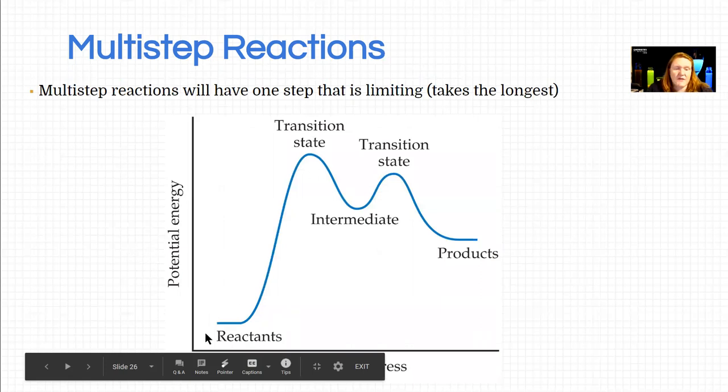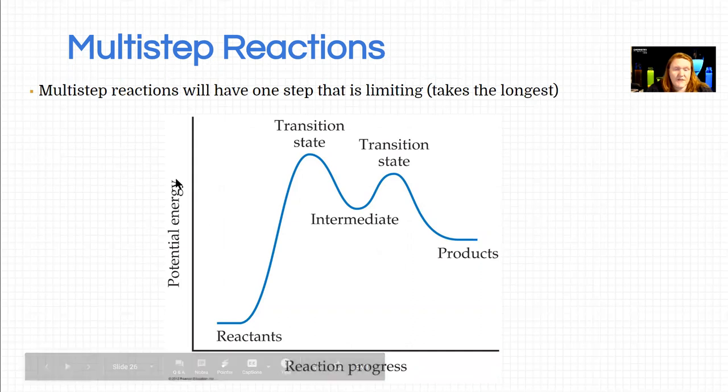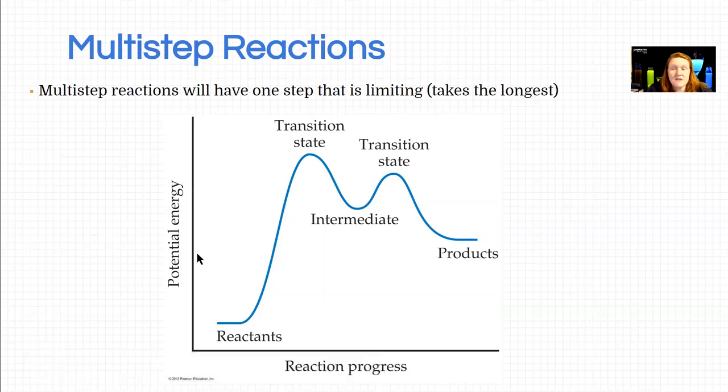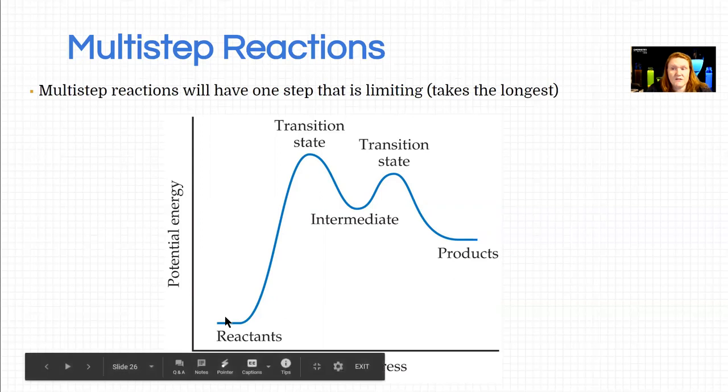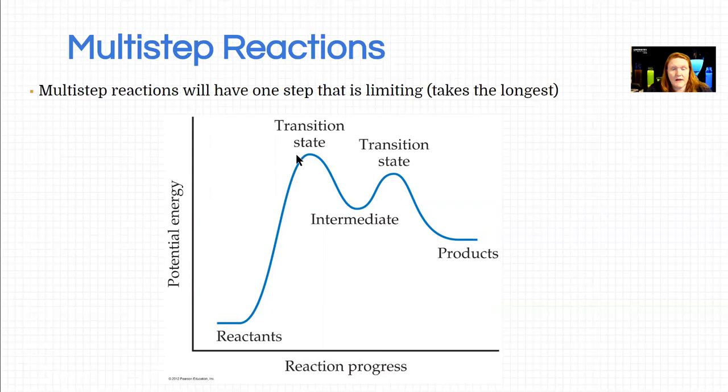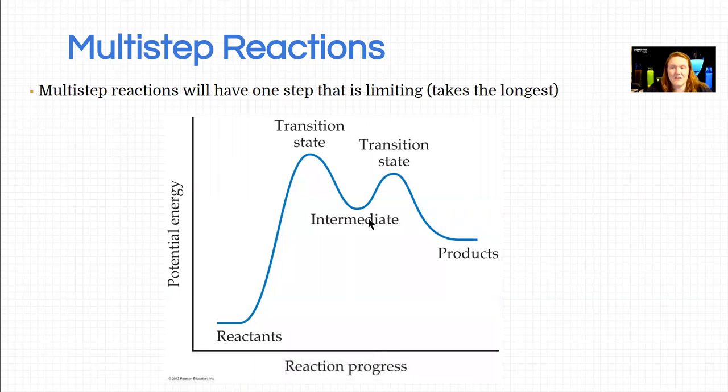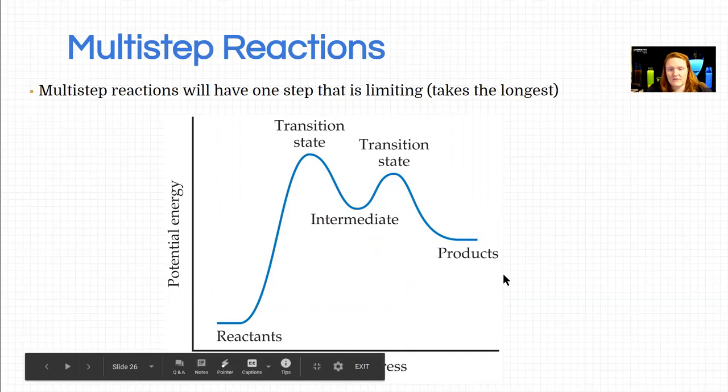Another reaction coordinate diagram here. Time or reaction progress versus energy. We already talked about what a transition state is. Sometimes when you have a multi-step reaction, you may have more than one transition state, particularly if you have more than one bond breaking. In between that, we have something that is semi-stable. It's lower in energy than either transition state is, but it's not as low as the products or the reactants. This is called an intermediate. An intermediate is something that we can usually see in real time. Transition states exist for such a short period you can't usually see them.